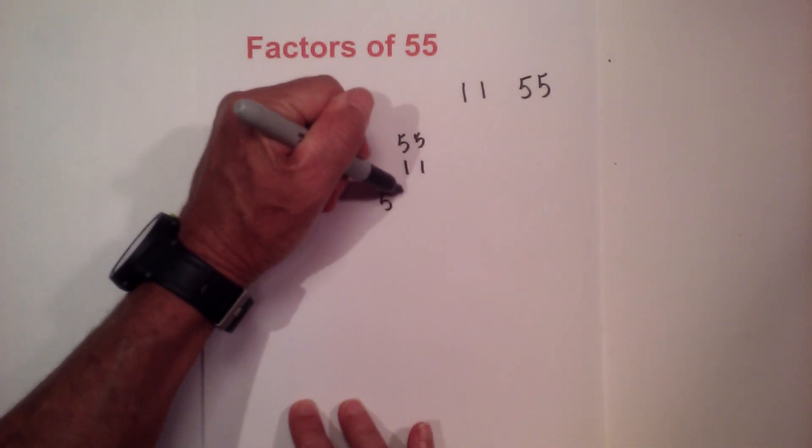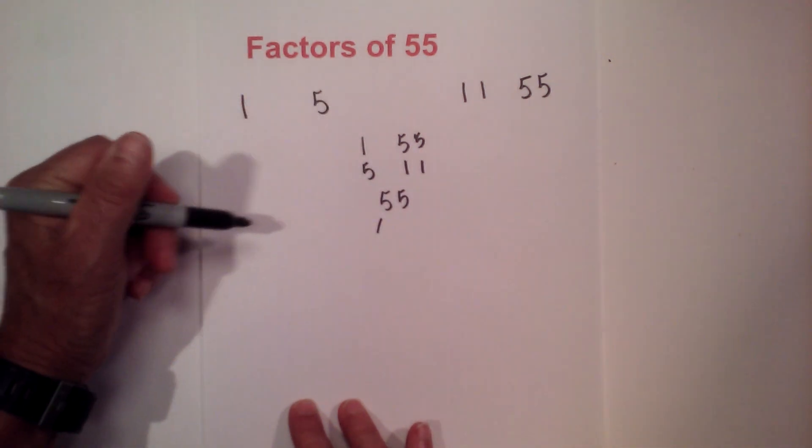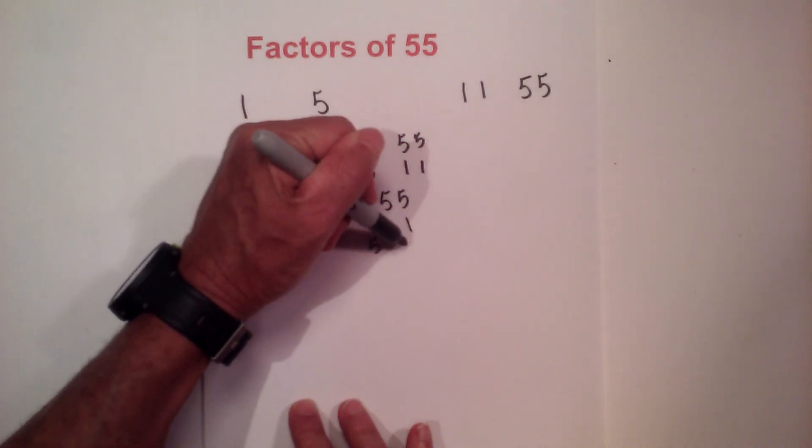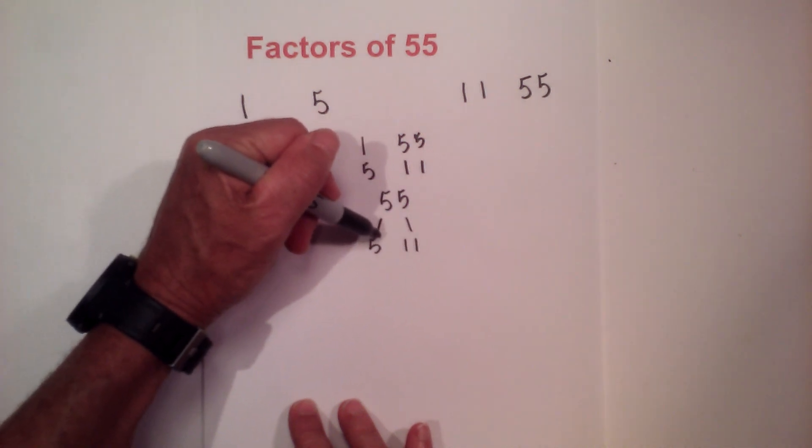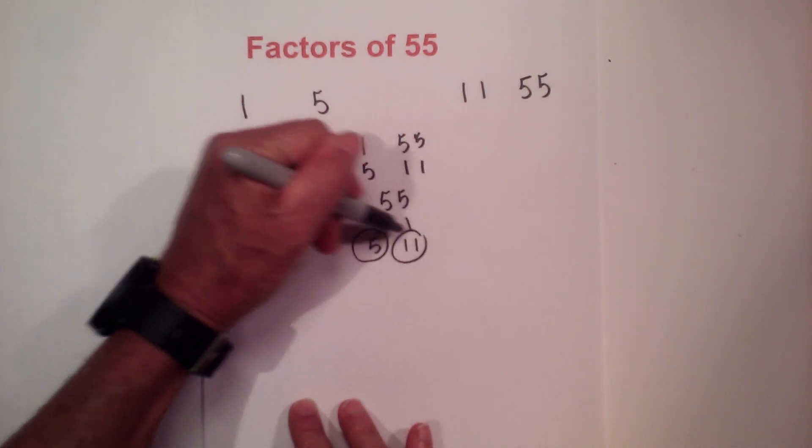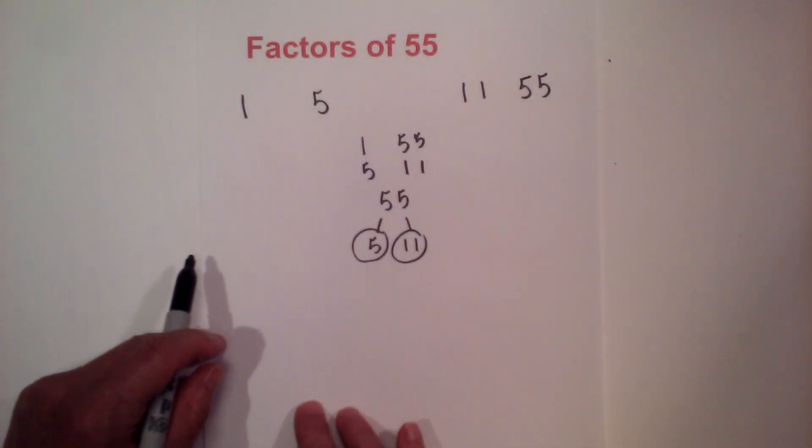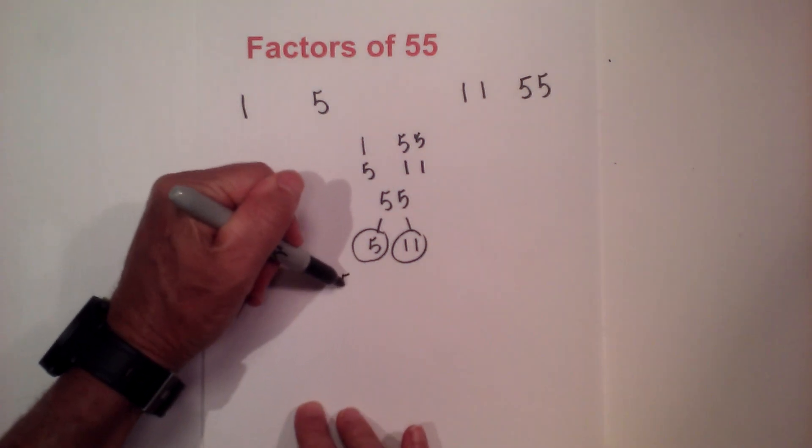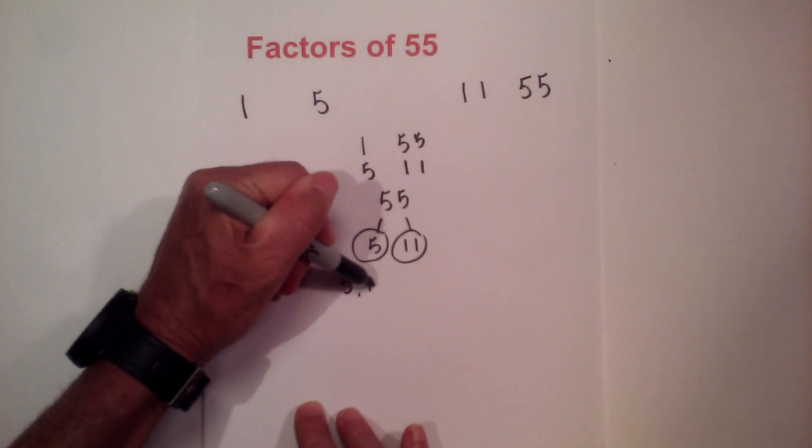Now to find the prime numbers of 55, I can complete a factor tree. 5 times 11 equals 55. Circle the 5 and 11 because they're both prime. So the prime numbers of 55 are 5 and 11.